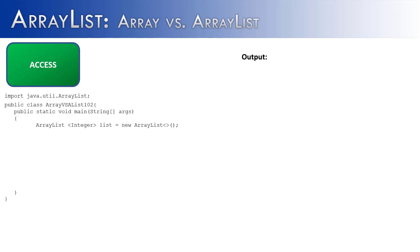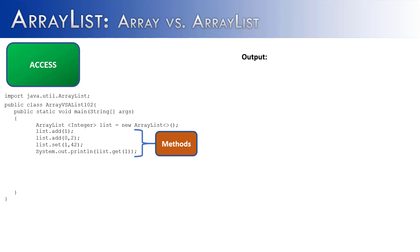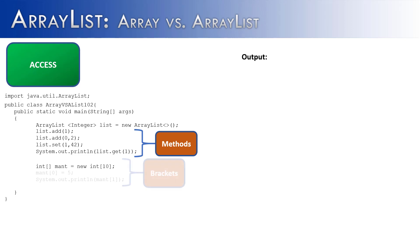Now let's talk about how elements inside an array and an array list are accessed. For an array list, you can see methods like add, the overloaded add, set, and get — so if you want to access something inside an array list, you need to use one of its methods. An array is different: if you want to set the 0th index to 5 or output what is in the first index, you use square brackets to set and pull data out.